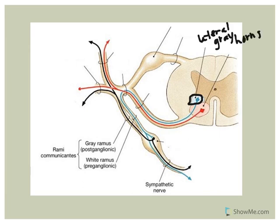The axons of these pre-ganglionic neurons are lightly myelinated and they're going to exit out through the ventral root and enter the spinal nerve.